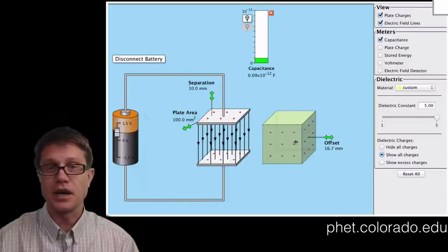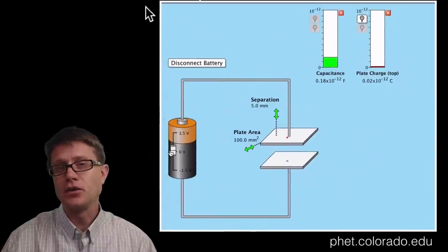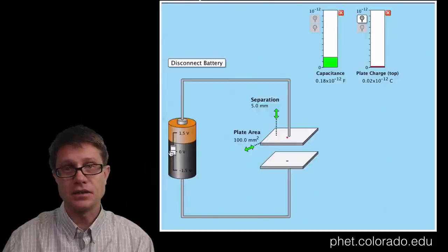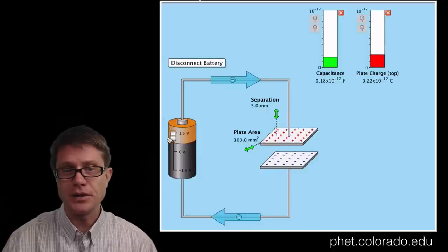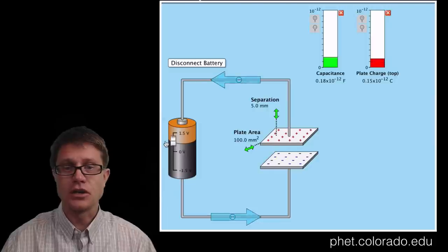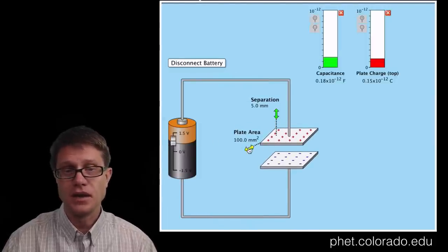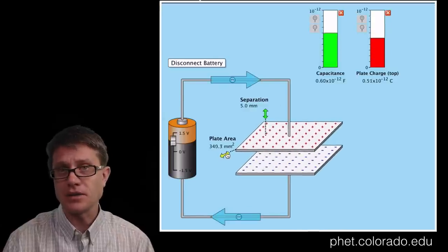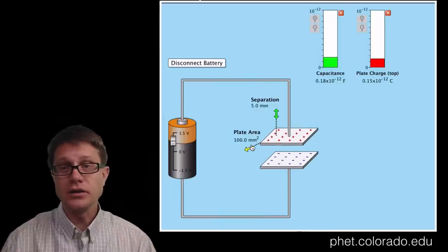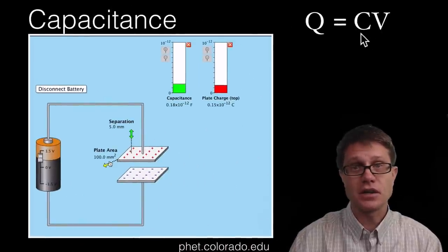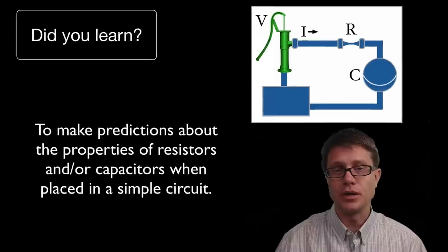If I pull the plates apart, make the area smaller, and pull out the dielectric, I have gotten rid of that capacitance. You should also be able to calculate the charge across a capacitor — that charge is simply equal to the capacitance times the voltage. With a capacitor hooked up to a battery: as I decrease voltage charge goes down, as I increase voltage charge goes up. There is a direct relationship between capacitance and charge, so the charge Q on a capacitor equals capacitance times voltage.